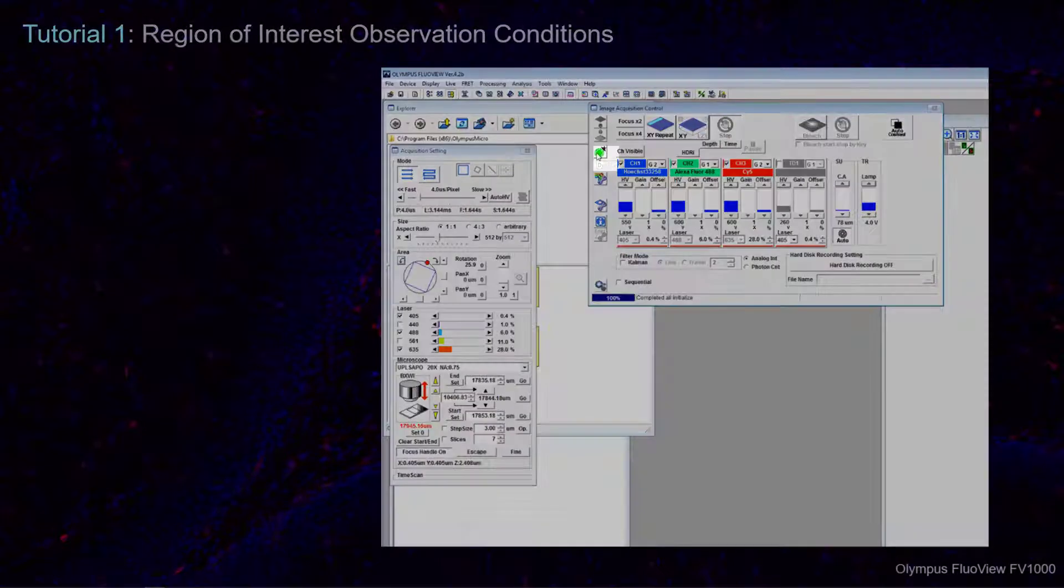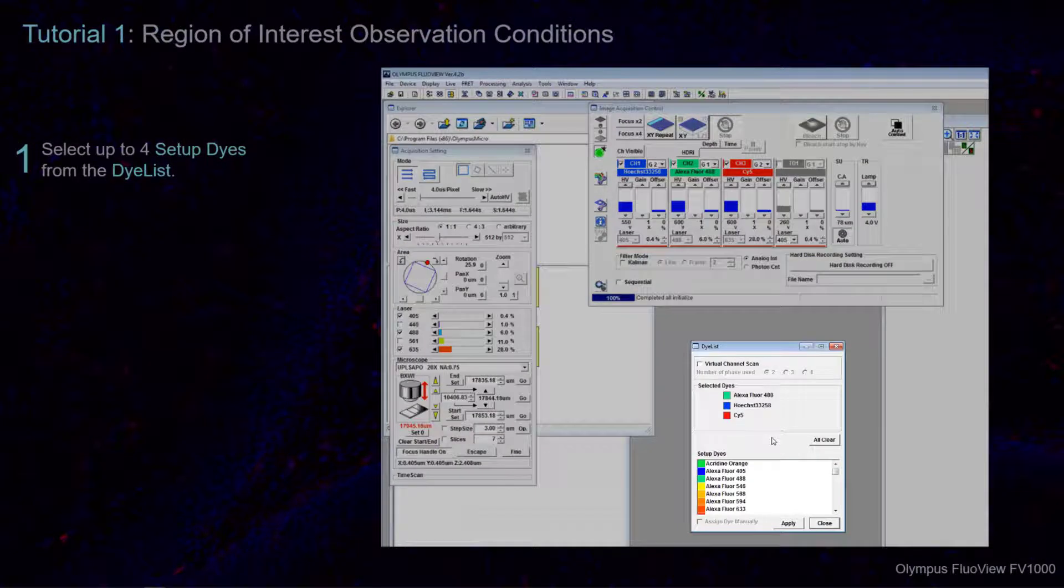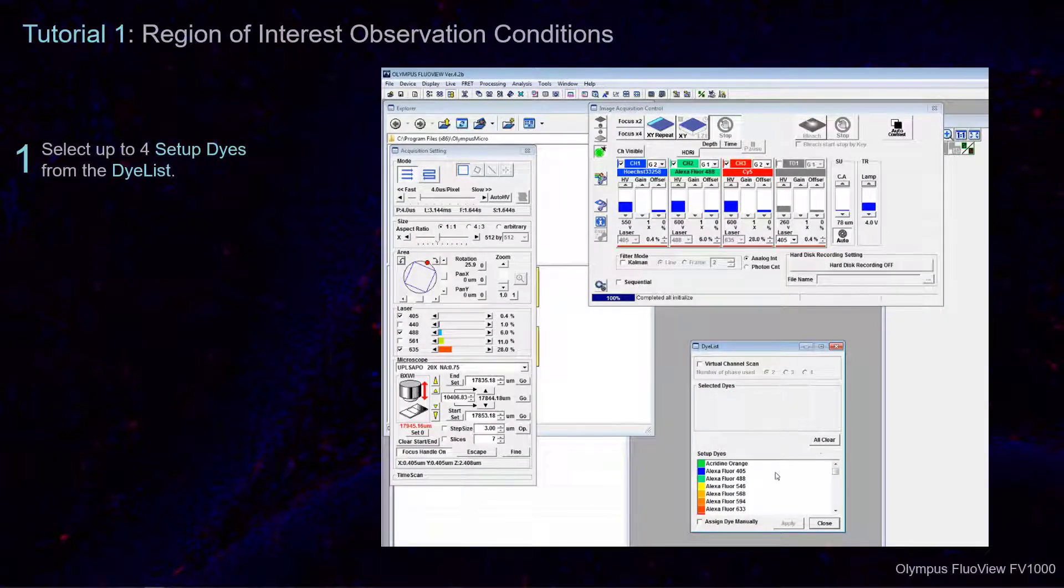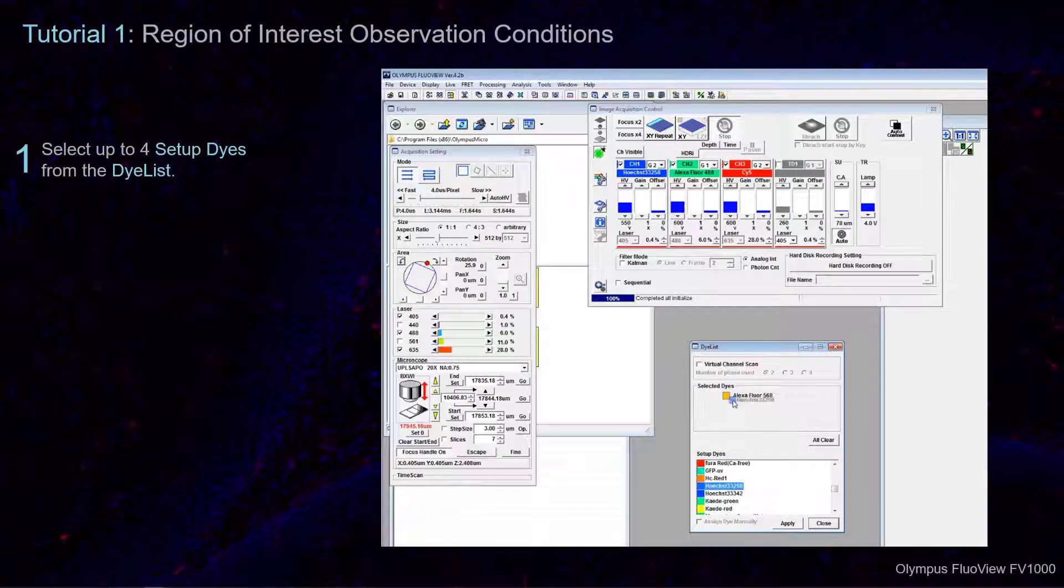Navigate to the Image Acquisition Control window and open the dye list. Clear the list as needed, then select up to four previously set up dyes by double-clicking or dragging and dropping the name.